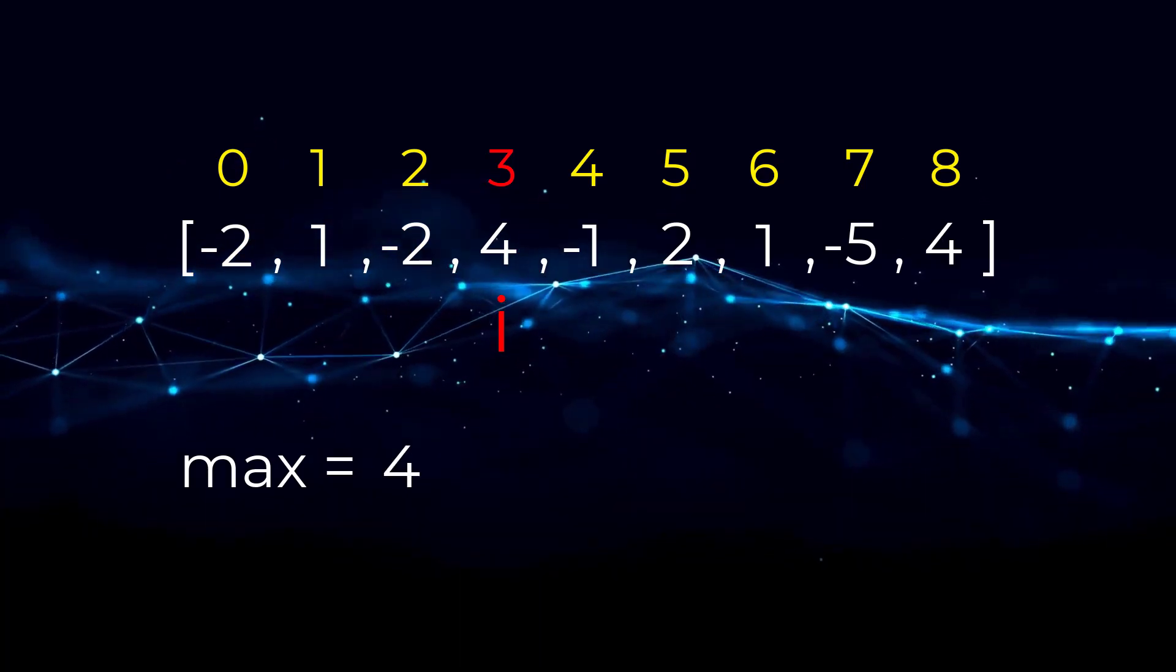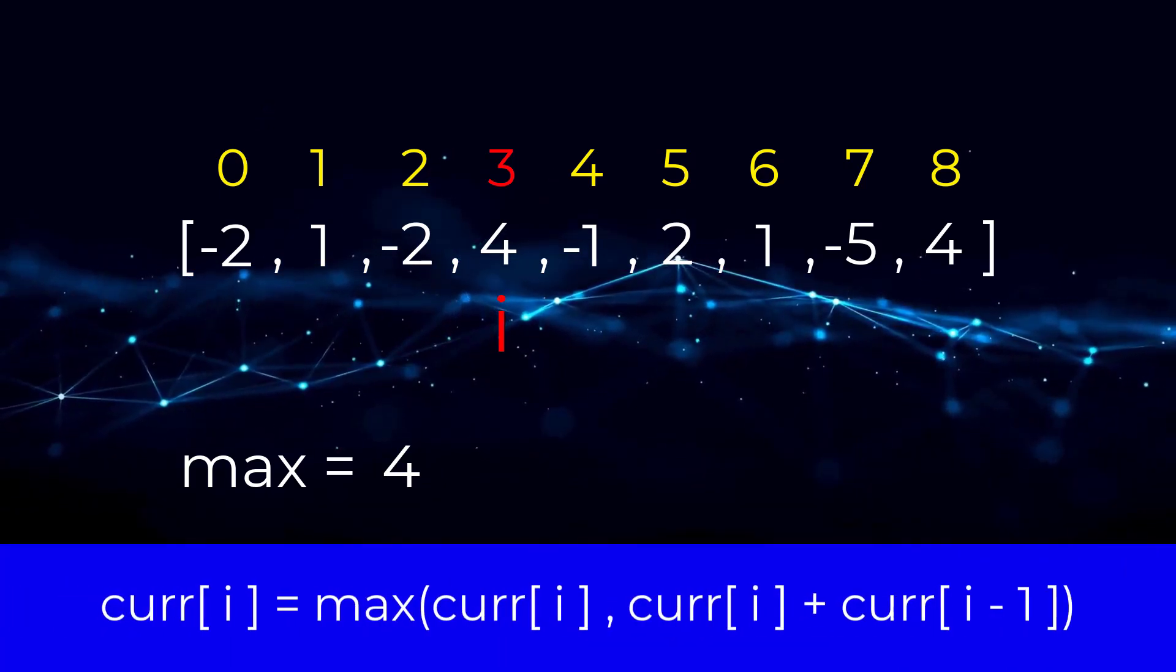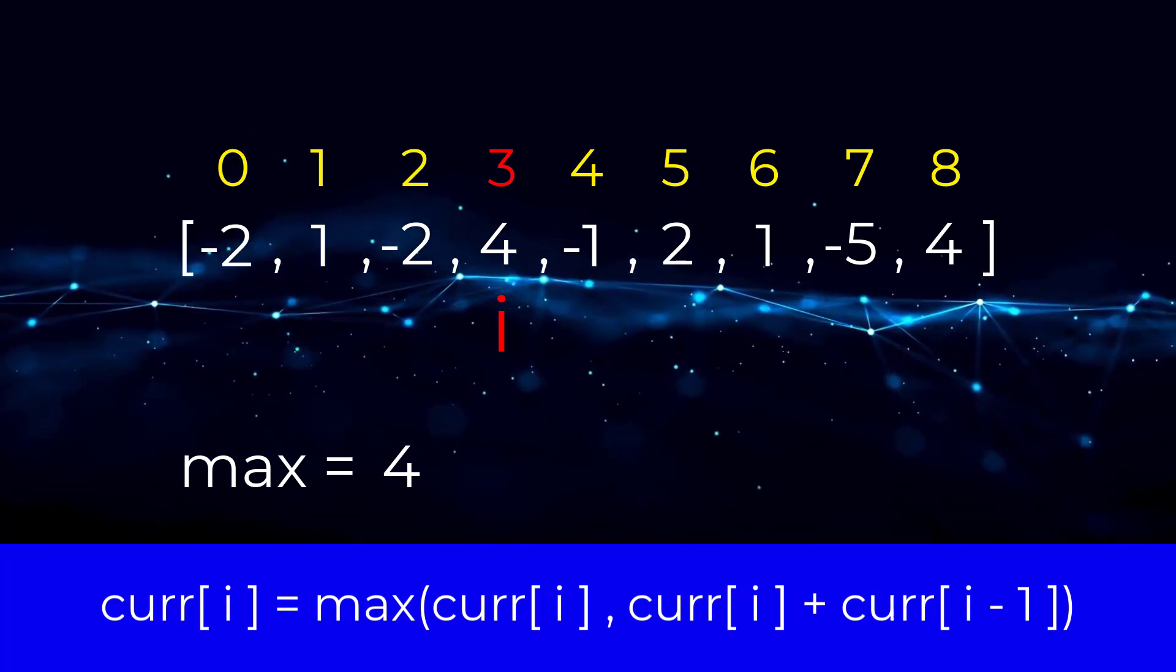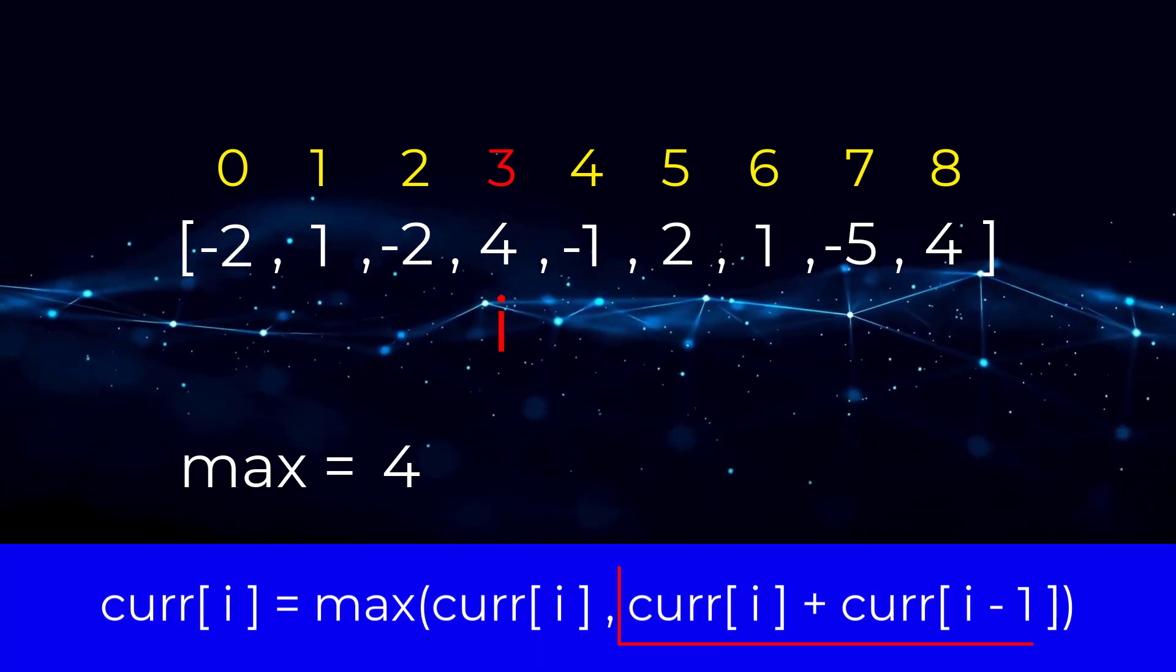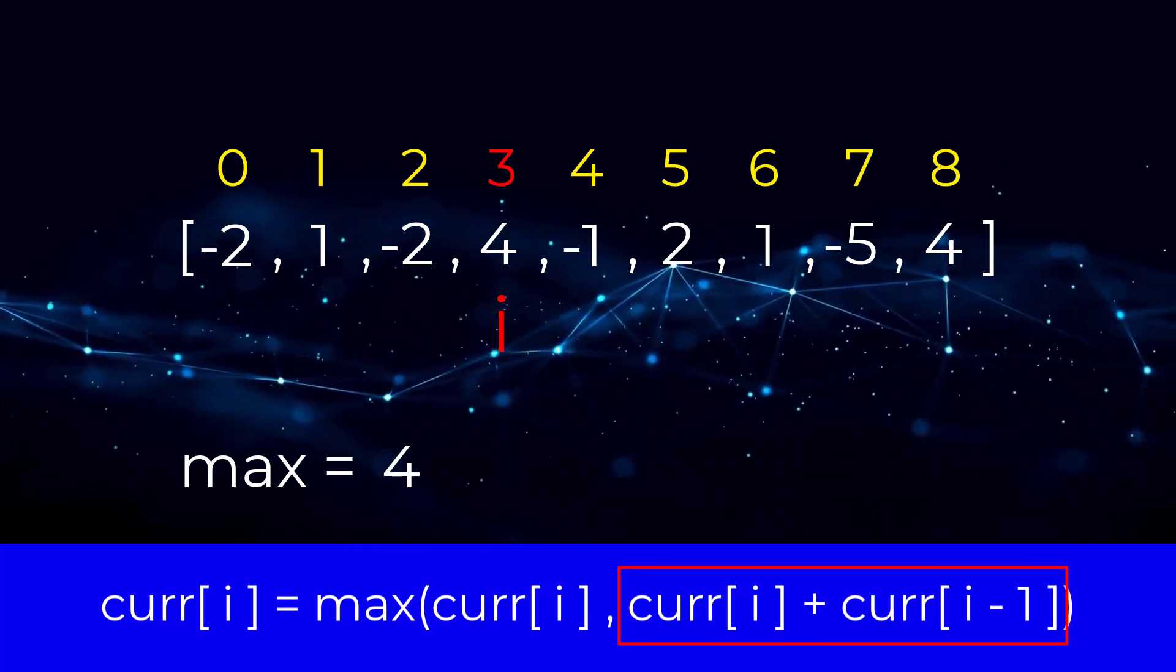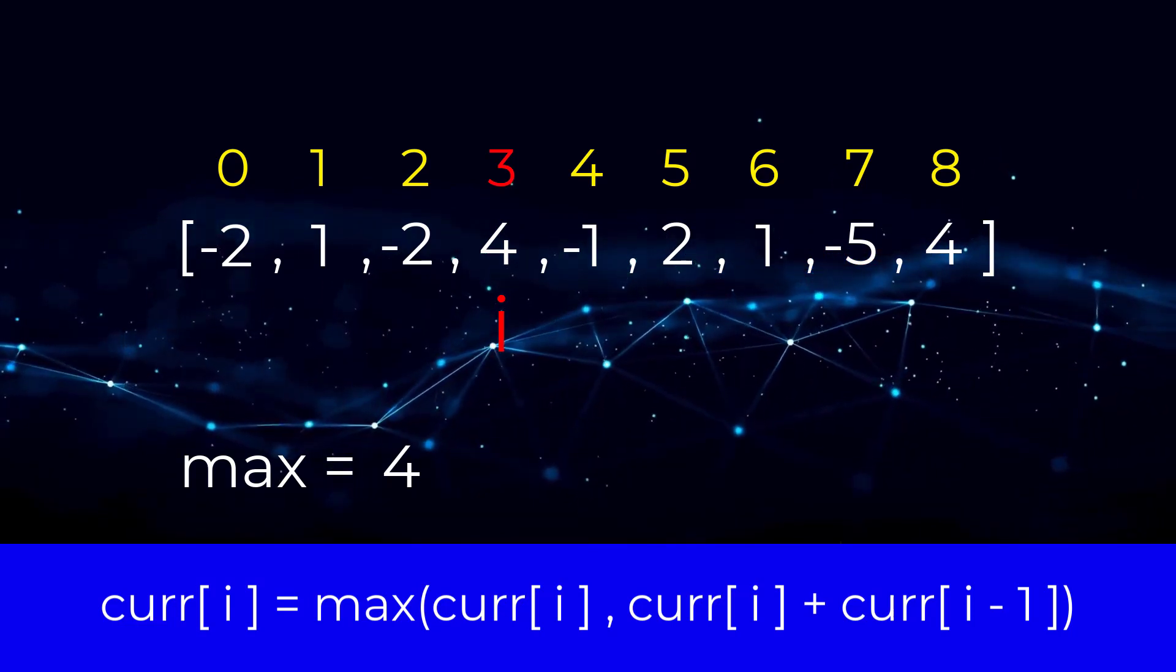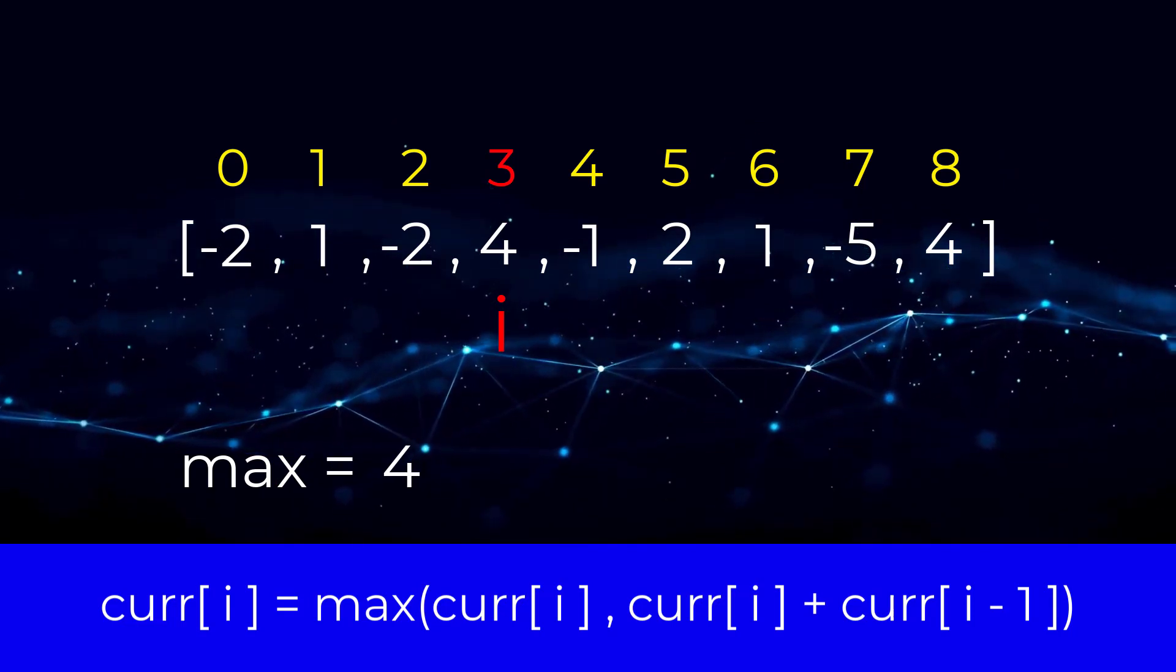If not, that's totally fine. The formula that we can use is the following. The current position of i is going to be equal to the max between the current position or the current position plus the previous position. So just to break this down further, this part of the formula is the subarray of size one. This part of the formula is the previous subarray plus the subarray of size one. Then we are just setting the calculation to the current position. So as you can see, this completely defines what dynamic programming is. We are building off of previous steps.